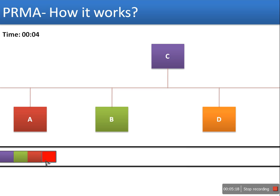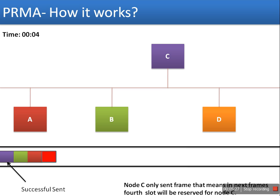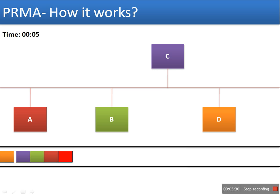Since the first slot had a collision, in the second frame the first slot is available for reservation. The next frame starts at time 5. Here we assume node D sends data successfully in the first slot. This means the first slot will be reserved for D until D's transmission is completed.